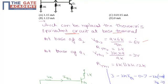At the base of Q1 transistor, VTH1 will be 3 volts and RTH1, which is 6kΩ in parallel with 3kΩ, will be 2kΩ.